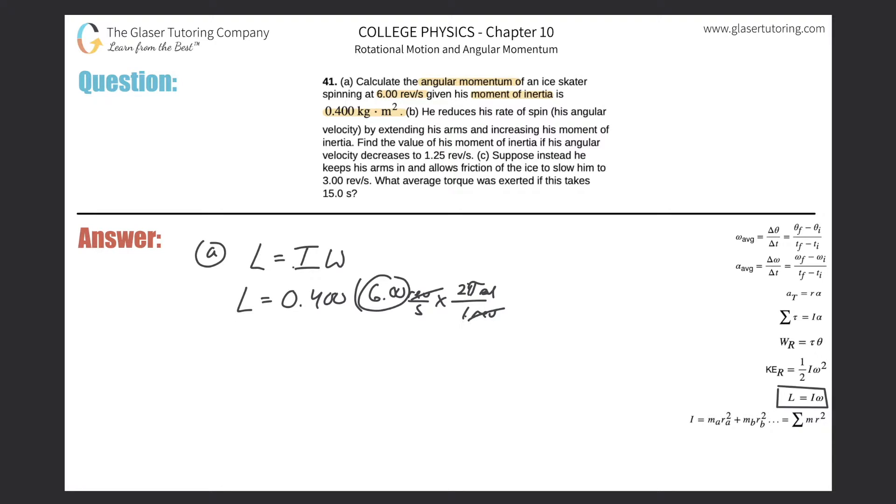So it's essentially 6 times 2π. I'm just going to clean it up a little bit so that just works out to be 12π. So that's 12π radians per second. That is the angular velocity.